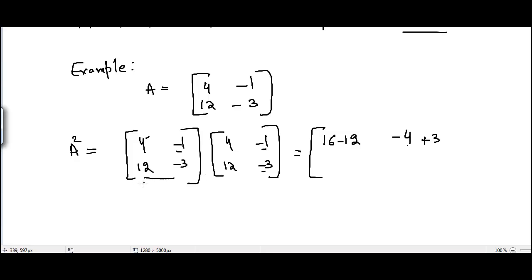And now second row, first column: 12 times 4 is 48, and -3 times 12 is -36. And now second row, second column: 12 times -1 is -12, and -3 times -3 is +9.